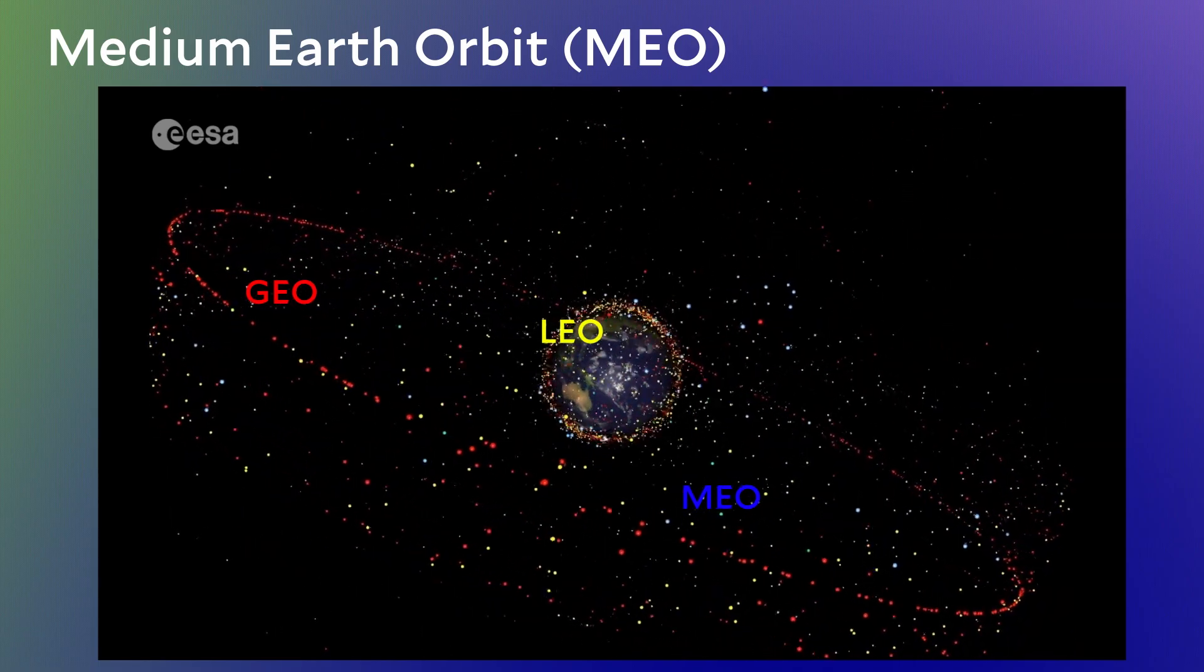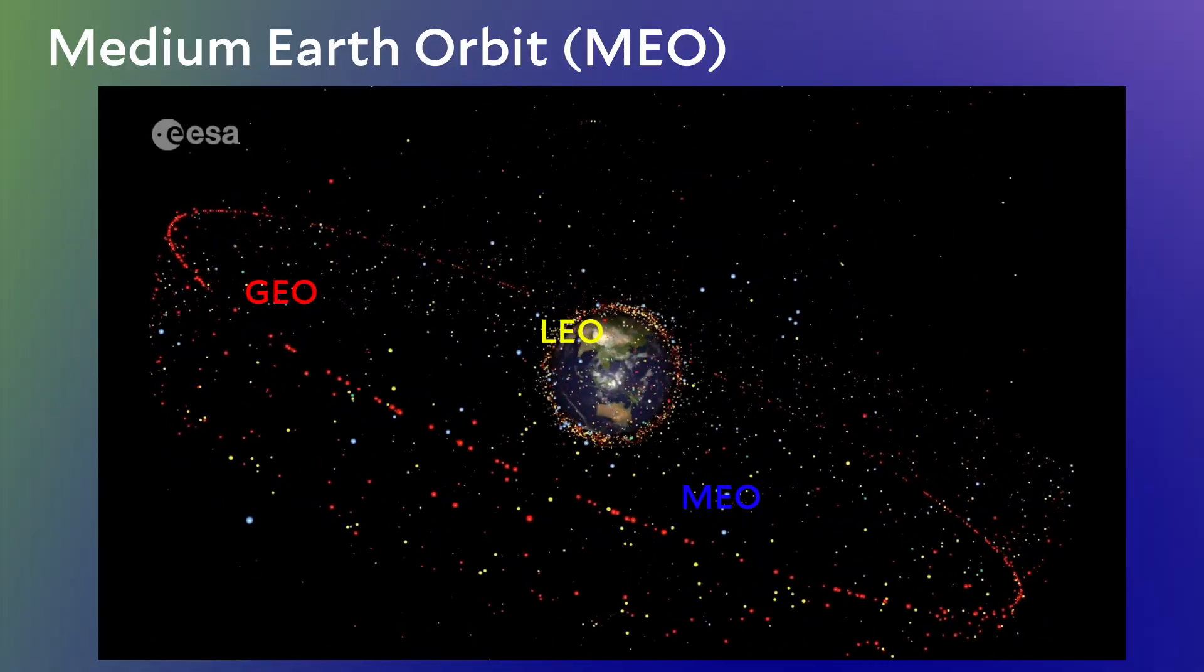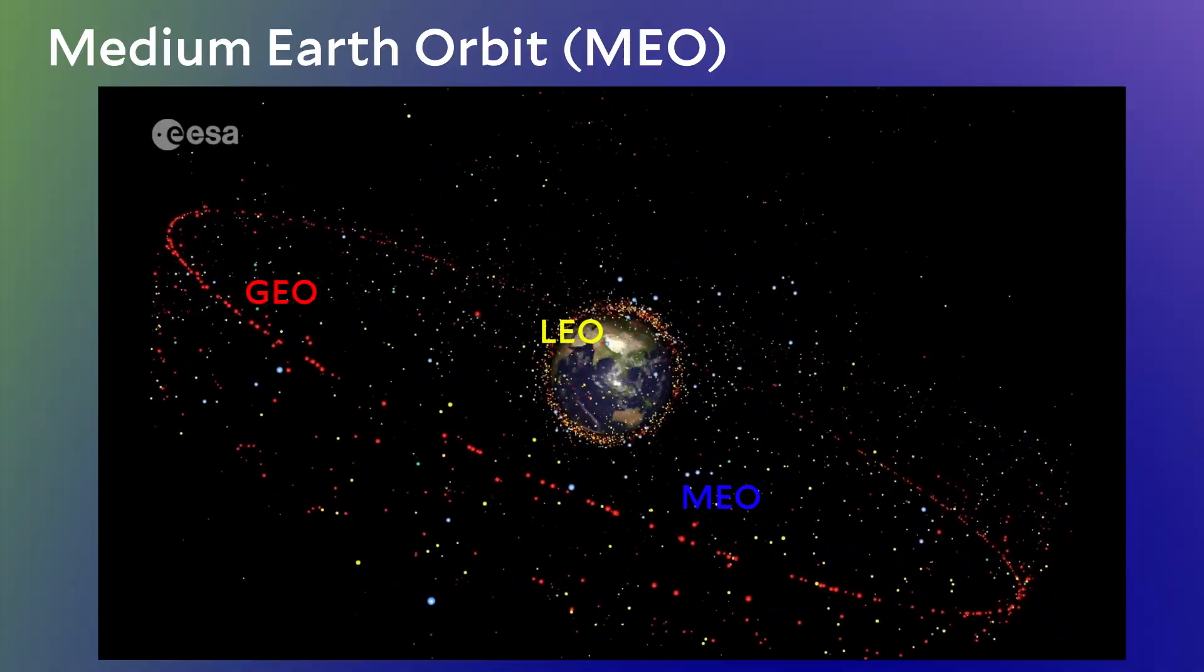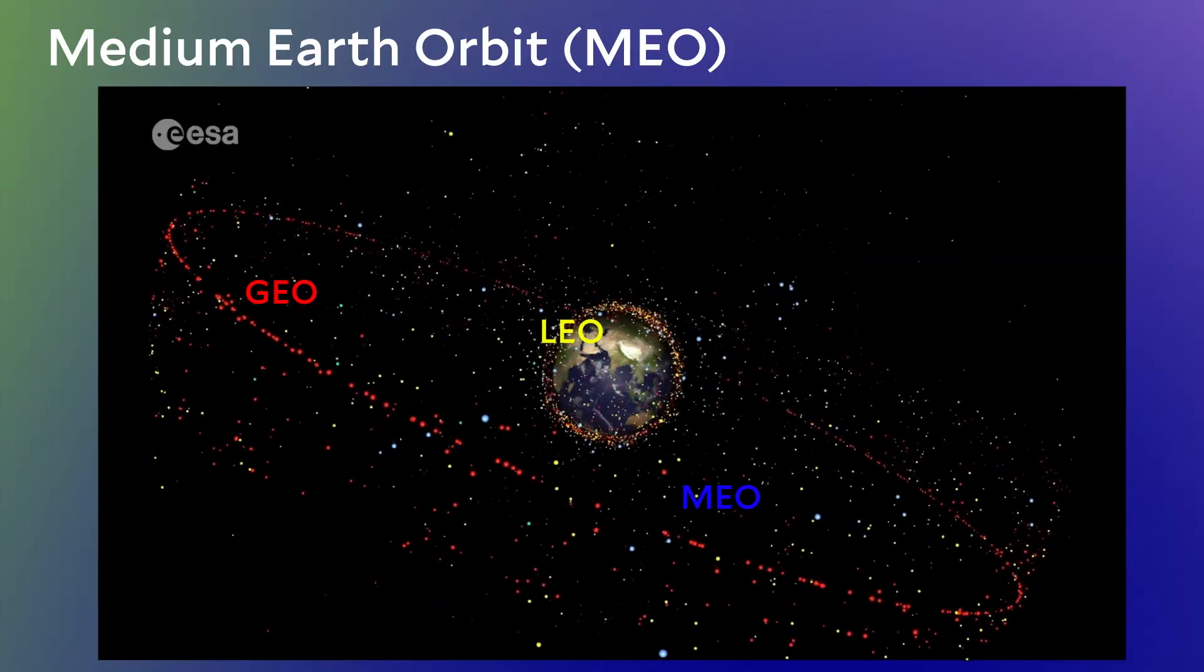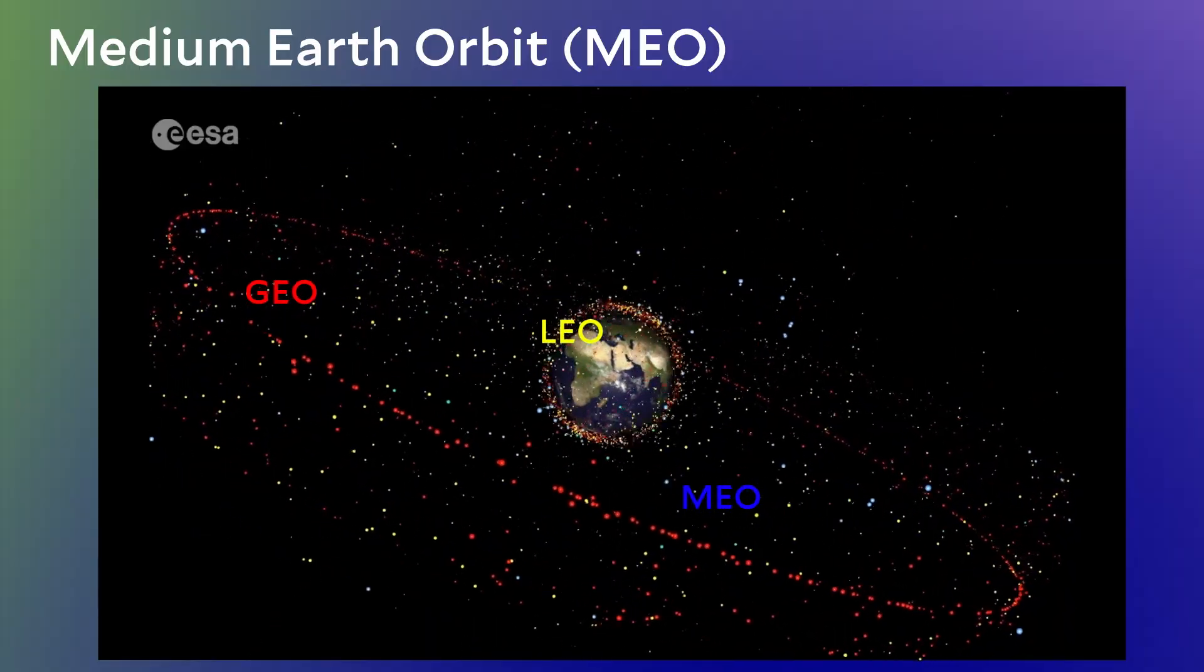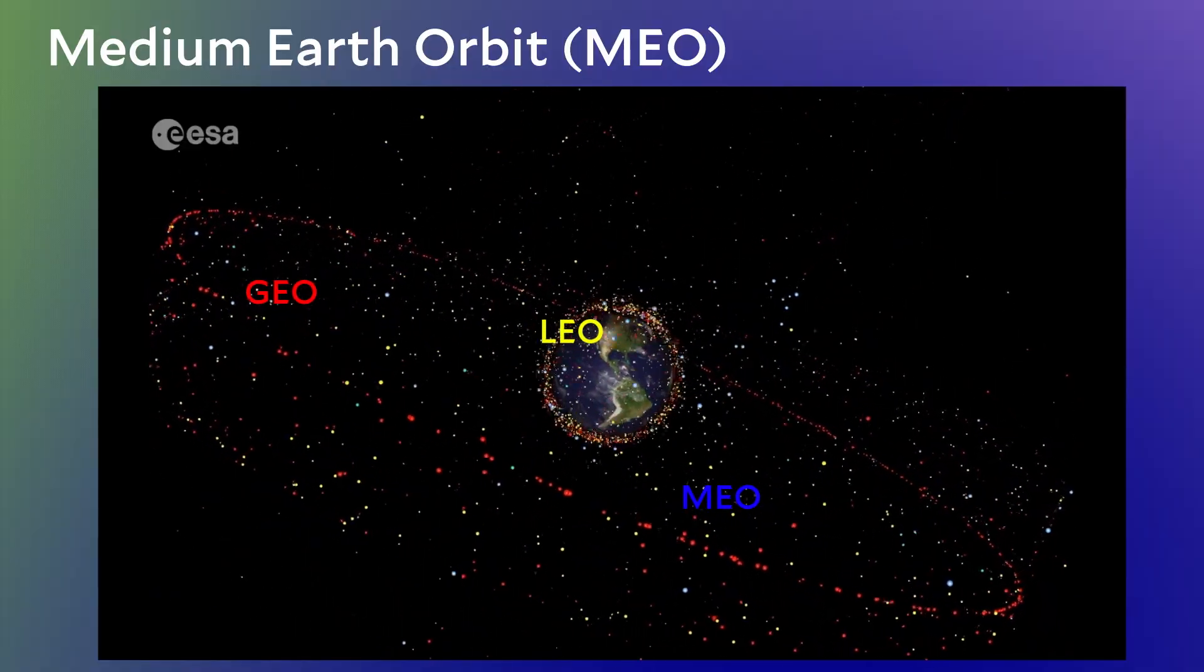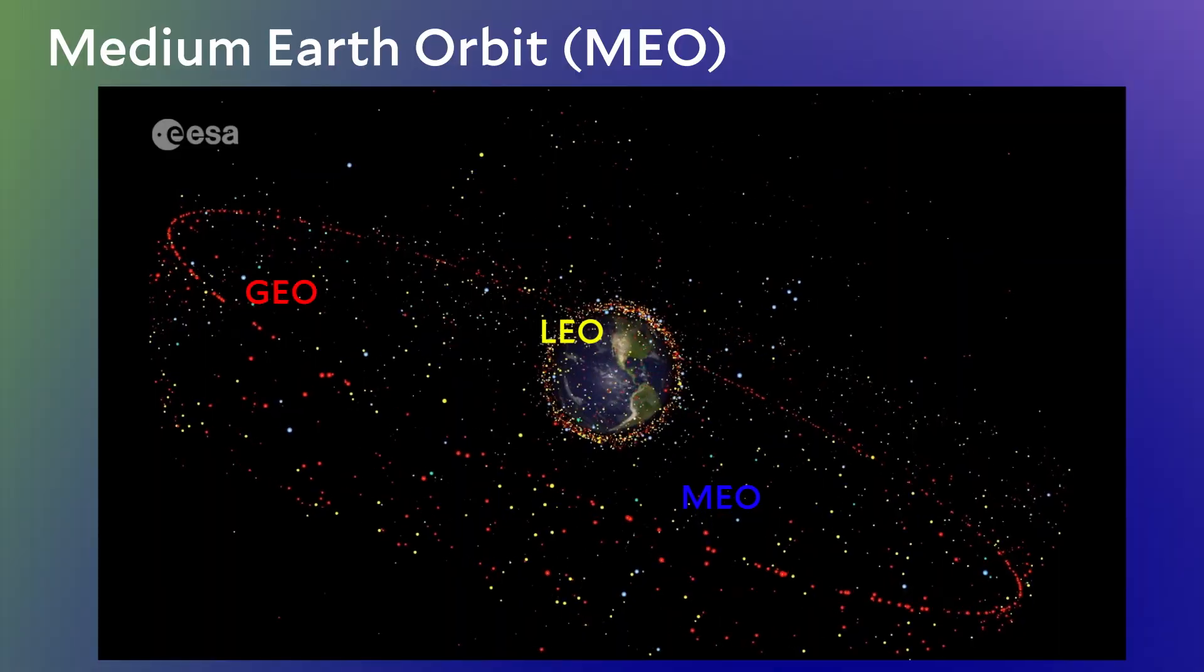For the United States, navigation means the Global Positioning System, or GPS. To explain both why there aren't many satellites in medium Earth orbits and why most satellites in this region are navigation, we need to take a step back and look at the environment around Earth. Specifically, we need to talk about the Earth's magnetic fields.